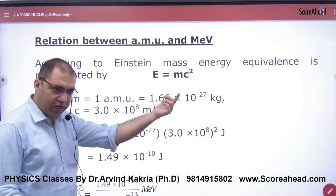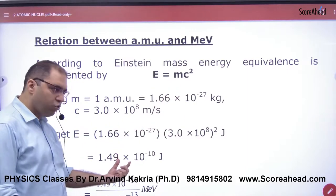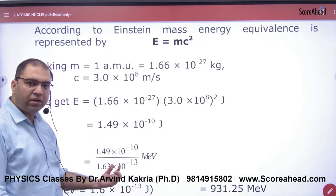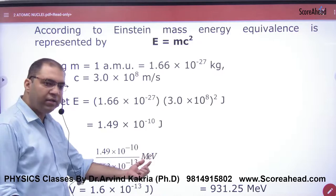And c is the speed of light. So we will solve it in Joules, and we will divide it by 1.6 × 10^-13. So it will convert from Joules to MeV.